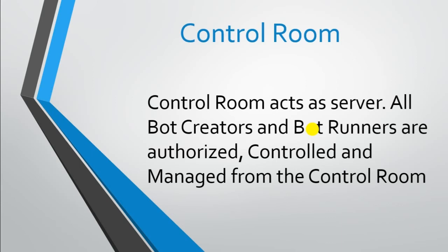The Control Room can control what type of bots should be created and what type of bots should be run. It manages things like whether to provide meta bots to clients, whether to give security credentials, and similar configurations. If you create a task in a Bot Creator and want to run it on a different Bot Runner, the Control Room acts as an intermediate server — it collects the task and runs it on top of the Bot Runner.